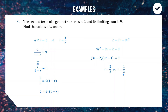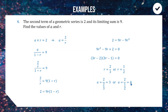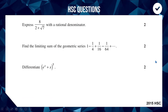Substituting both values back into a = 2/r: when r = 2/3, a = 2 ÷ (2/3) = 3; when r = 1/2, a = 2 ÷ (1/2) = 4. So there are two possible scenarios: either a = 3 and r = 2/3, or a = 4 and r = 1/2. Because we had a quadratic we got two solutions — which is why this question is a little extra challenging.